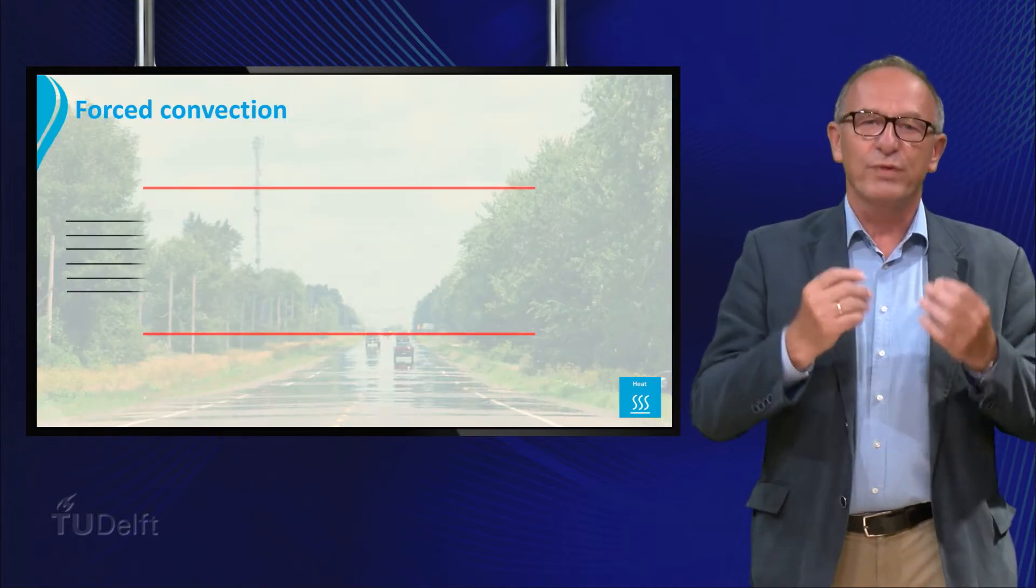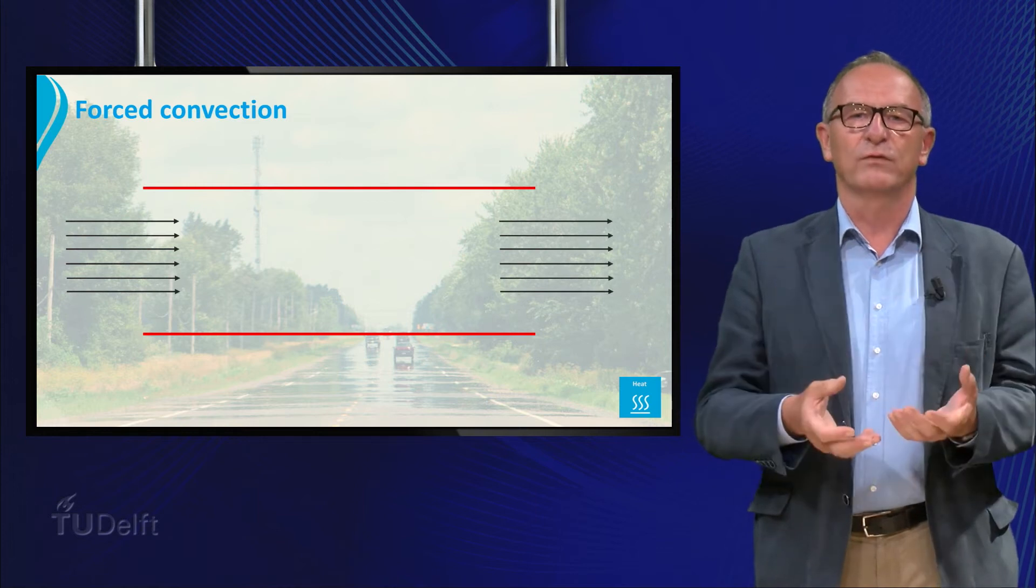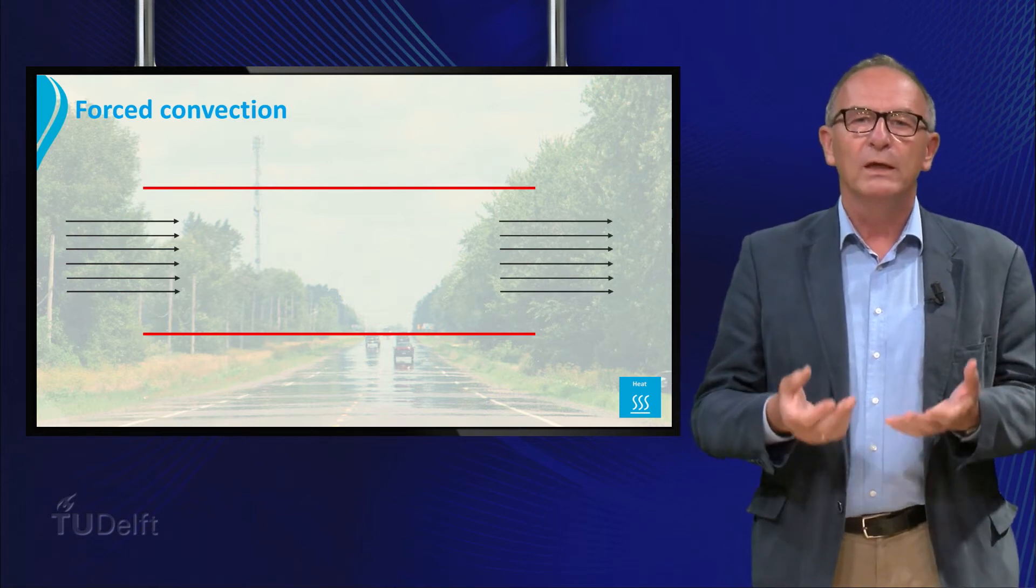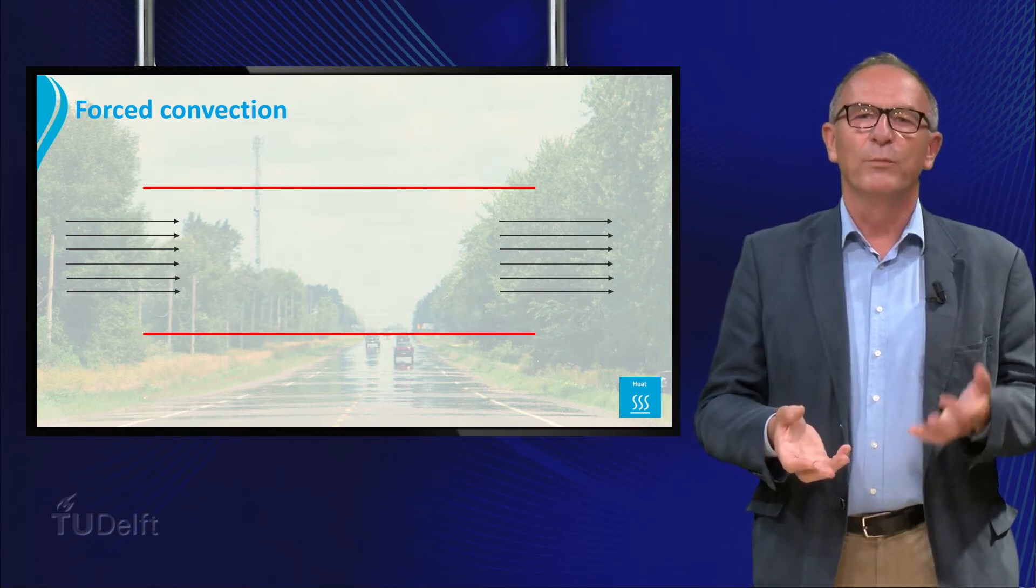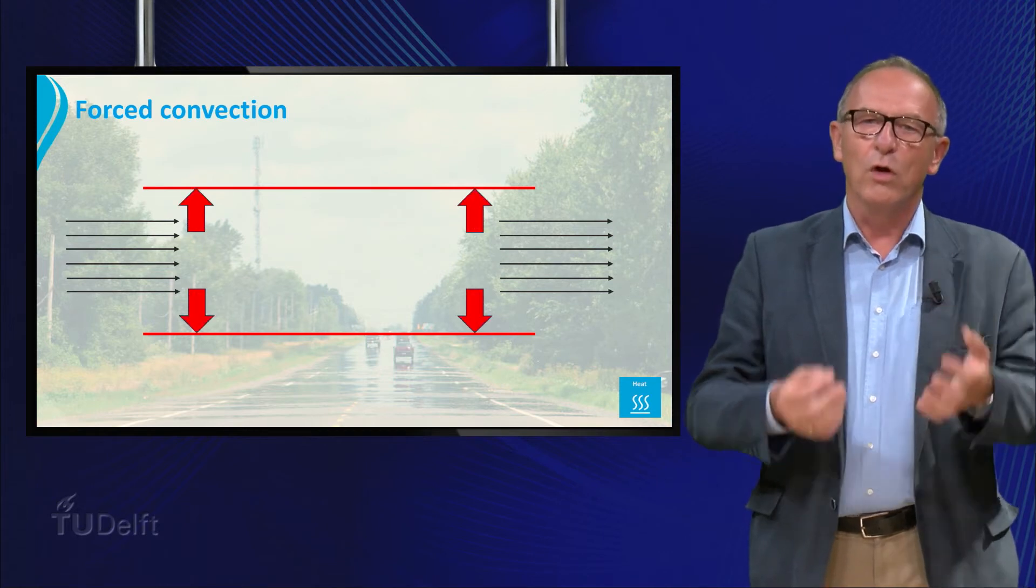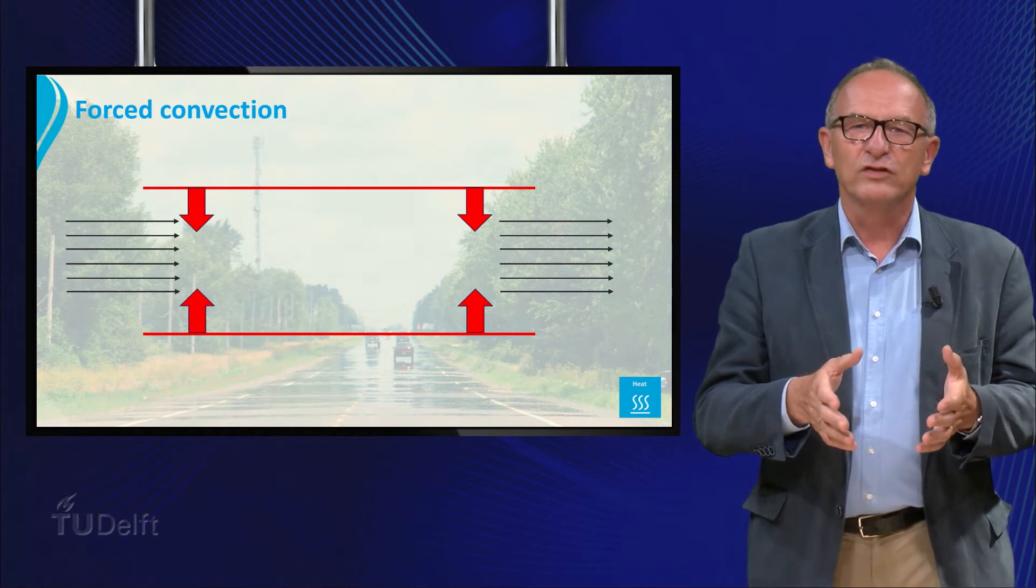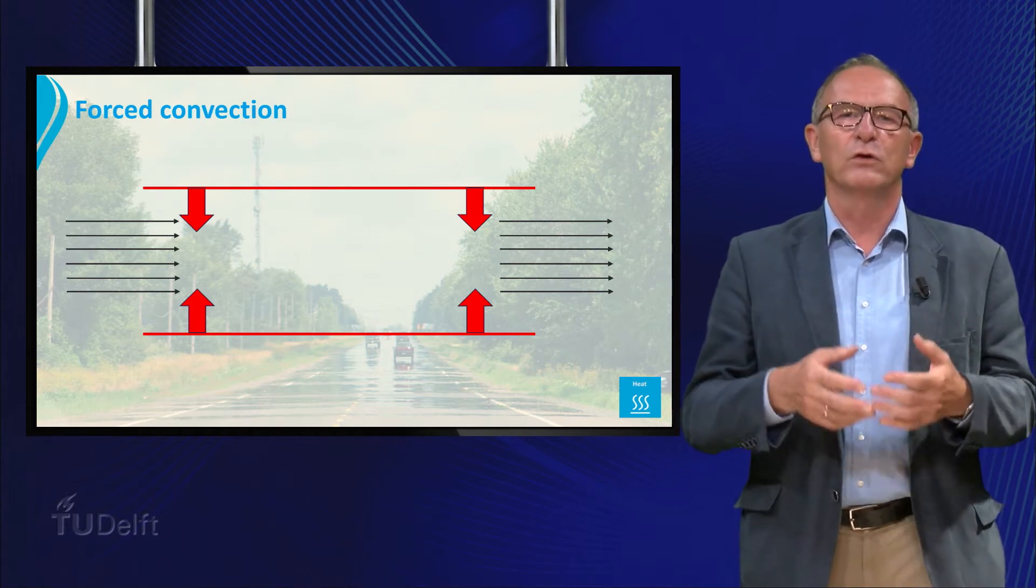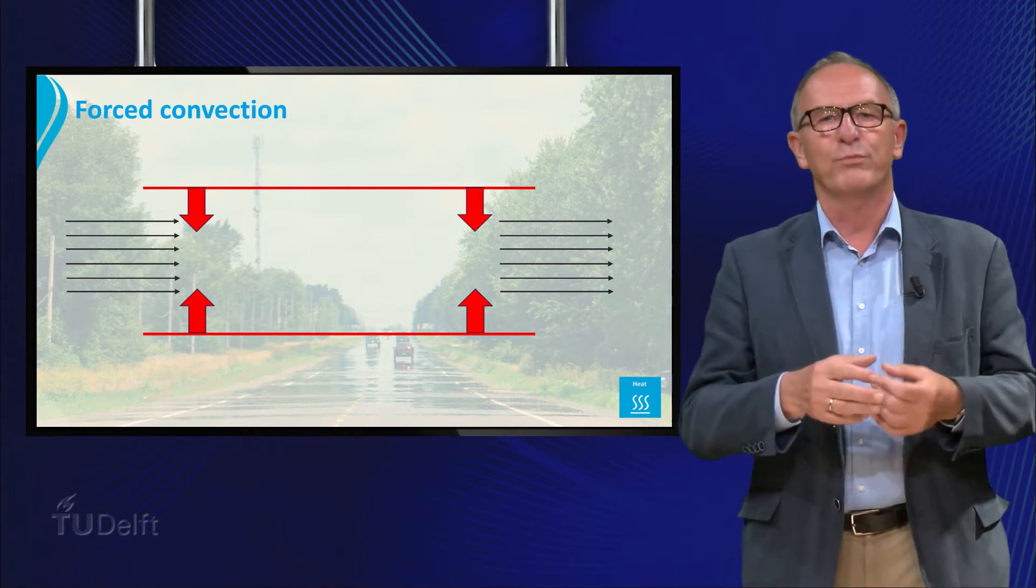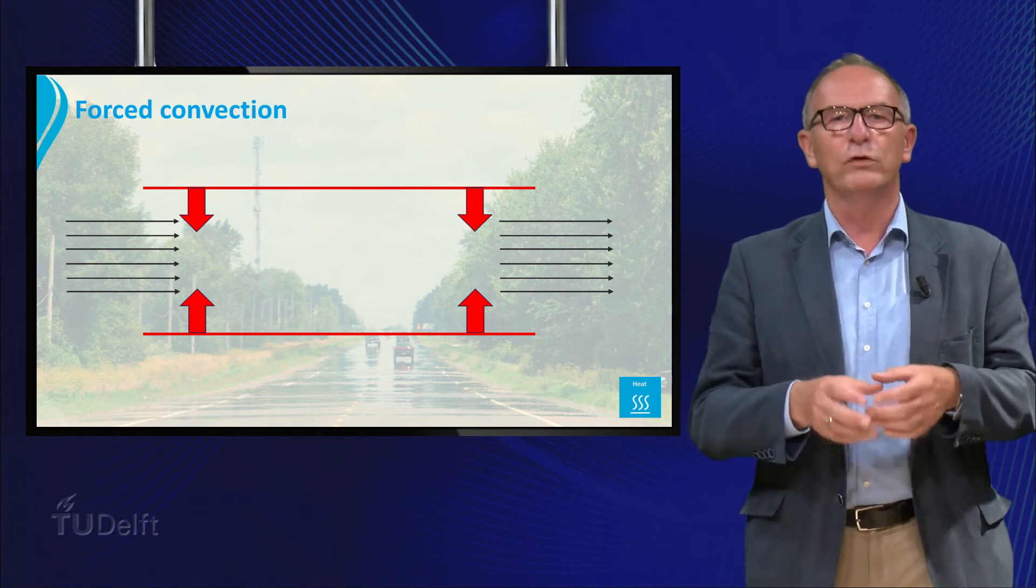If we have a flow as a result of a pressure difference, for example in the case of flow through a pipe, heat can be transferred from the fluid to the wall or from the wall to the fluid. We call this type of convection forced convection because the fluid is forced by a pressure gradient to flow through the pipe.